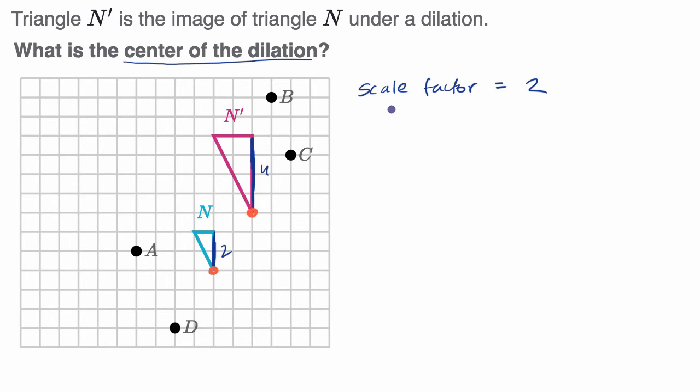So in this example, we know the scale factor is two. So this is going to be twice as far from our center of dilation as the corresponding point. Well, you can immediately see it. It's going to be in the same direction. So actually, if you just draw a line connecting these two, there's only one choice that sits on that line and that is choice D right over here as being the center of dilation.